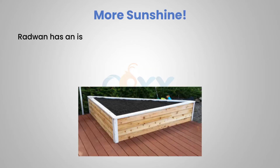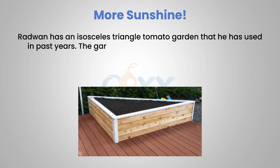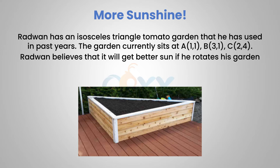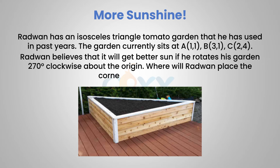Radwan has an isosceles triangle tomato garden that he has used in past years. The garden currently sits at the points A (1,1), B (3,1), and C (2,4). Radwan believes that it will get better sun if he rotates his garden 270 degrees clockwise about the origin. Where will Radwan place the corners of the new garden? If you'd like to know the answer, follow along and we'll revisit it at the end.